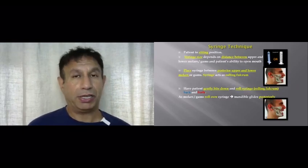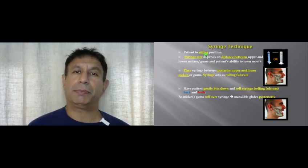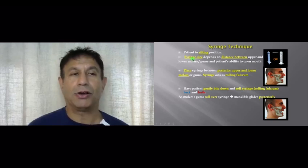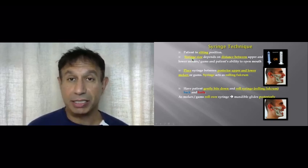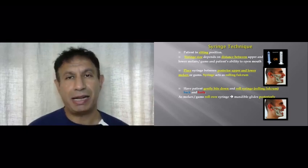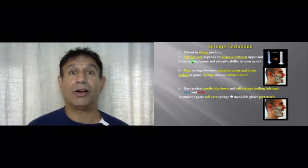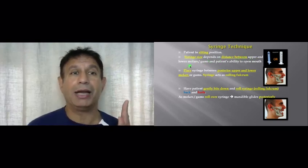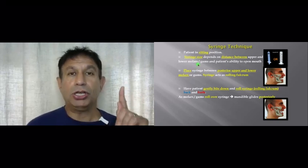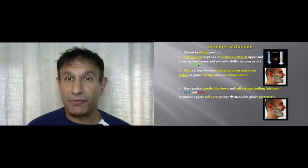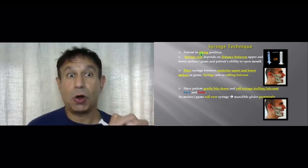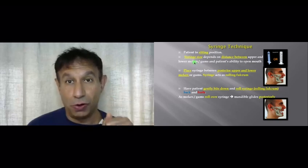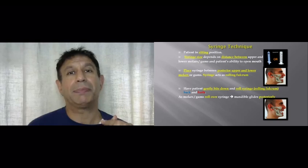In this particular technique, the patient is in the sitting position. The next thing is to choose the correct size of syringe. The choice is between a 5ml syringe or a 10ml syringe. The size of the syringe depends on the distance between the patient's upper and lower molars. The patient should be able to comfortably bite on the syringe or rest on the syringe between the upper molar teeth and lower molar teeth in the dislocated position.